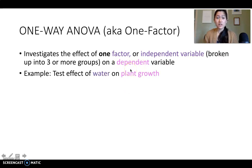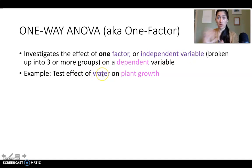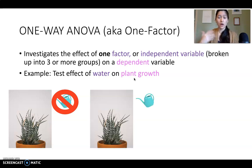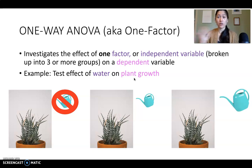An example of this: you might be testing the effect of water on plant growth. In this case, our independent variable would be the amount of water, and the dependent variable that we're measuring is the amount of plant growth. So it might look something like this — you have one group of plants getting no water, another group getting a little bit of water, and a third group getting a lot of water.